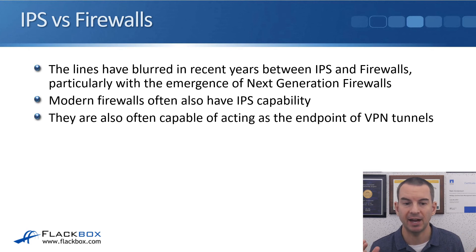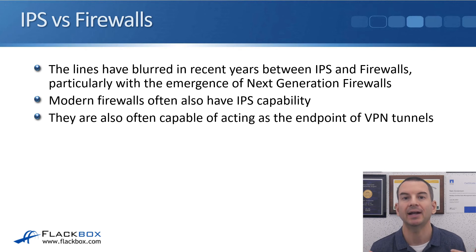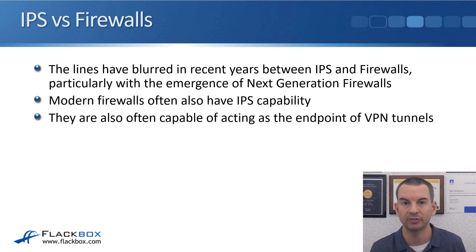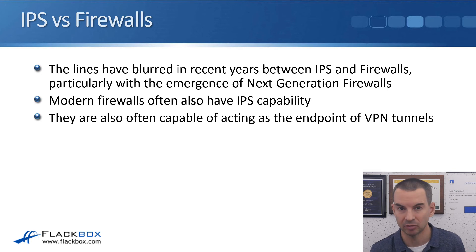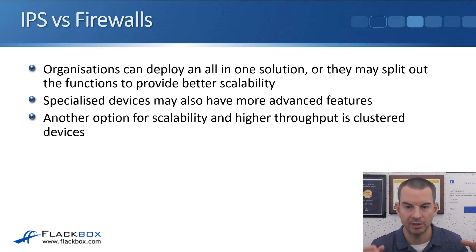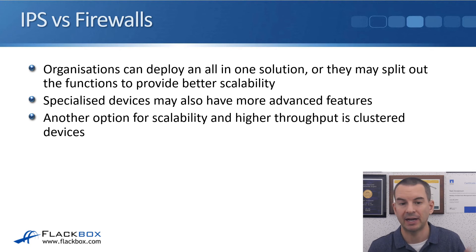The lines have blurred in recent years between IPS and firewalls. You can now get all-in-one devices — firewalls with IPS capability built in — and this has become particularly prevalent with the emergence of next-generation firewalls. Modern firewalls often have IPS capability as well as firewall capability, and are also often capable of acting as the endpoint of VPN tunnels. Organizations can choose an all-in-one solution, or split out those functions for better scalability. Specialized separate devices may also have more advanced features than an all-in-one solution.